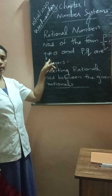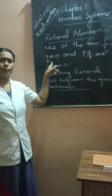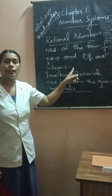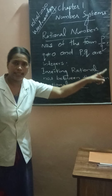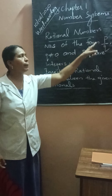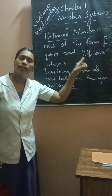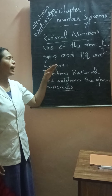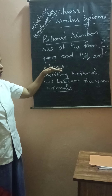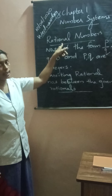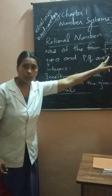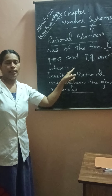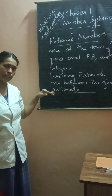But there is one condition: Q cannot be 0. Why Q not equal to 0? Because any number divided by 0 is not defined. That is, P by 0 is not defined. P can be 0, but Q cannot be 0. And in this chapter, we have to study about rational numbers — numbers of the form P by Q, where Q is not equal to 0 and P and Q are integers.